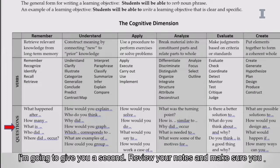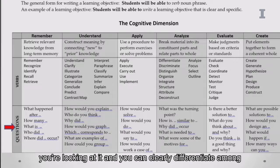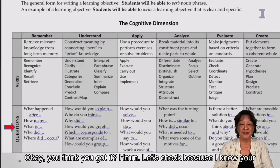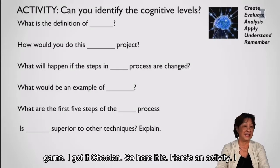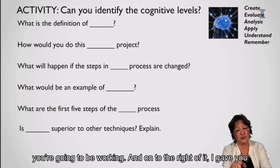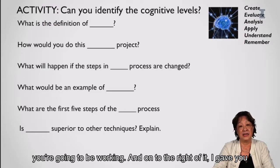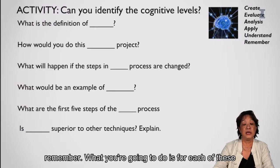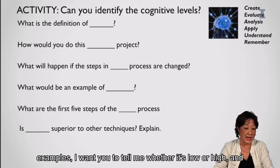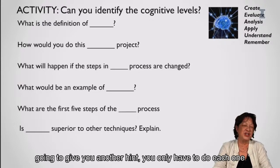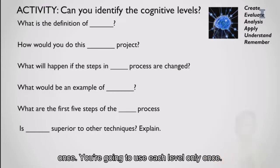Do you think you got it? Review your notes and make sure you can clearly differentiate among the levels. Here's an activity: on a piece of paper, look at each example question. I've given you the levels — create, evaluate, analyze, apply, understand, remember. For each example, tell me whether it's low or high, and which specific level it is. You'll use each level only once.